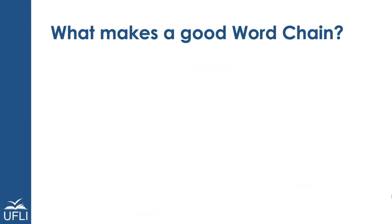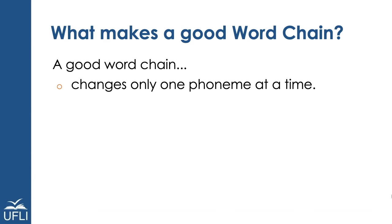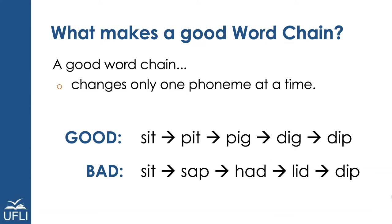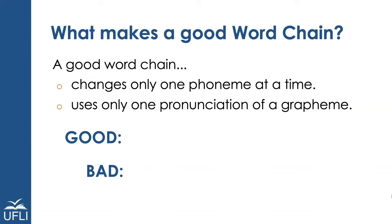When you're constructing a word chain, there are some things to think about. First, a good word chain changes only one phoneme at a time. Here's an example of a good word chain: going from sit to pit, pit to pig, pig to dig, dig to dip — in each change, I only changed one sound. In contrast, sit to sap to had to lid to dip changes more than one sound at a time. A good word chain also only uses one pronunciation of a grapheme.